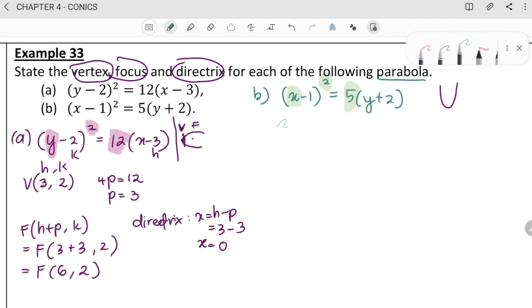So, find the vertex first. Because it's X here, so it would be H here. Y here would be K here. So, the vertex is H, K. H is 1. And K is negative 2.